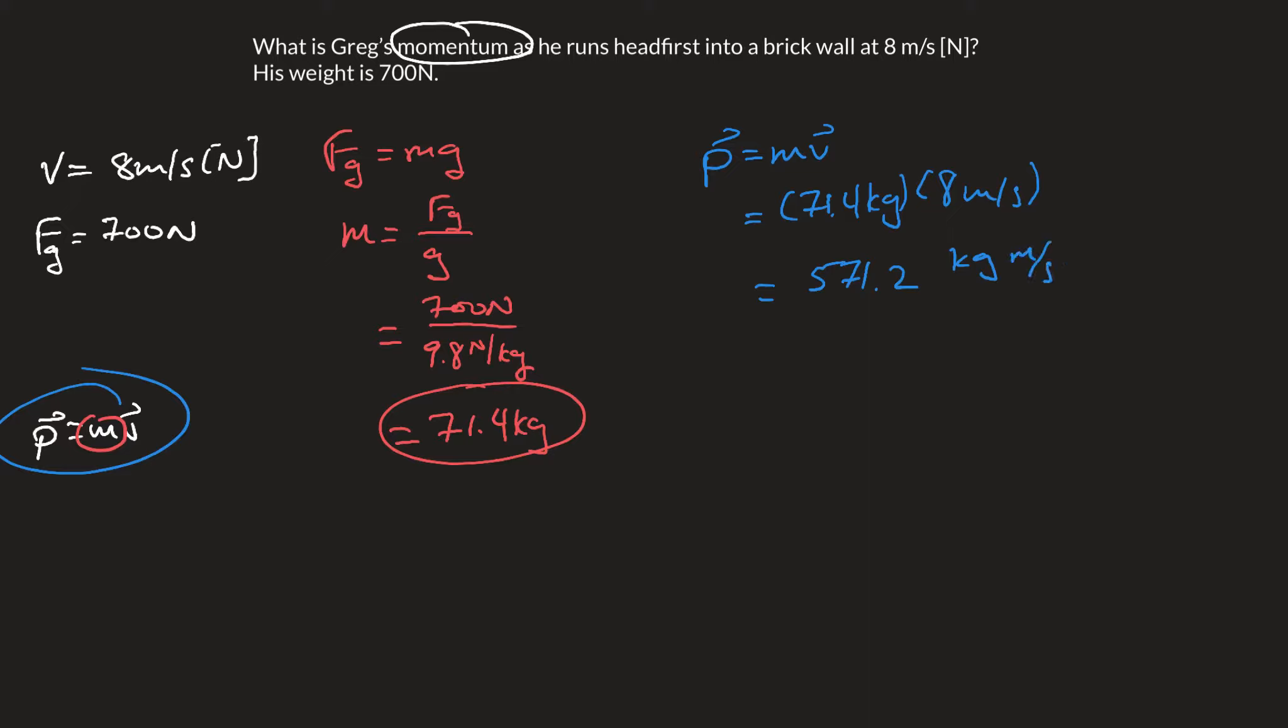And of course, it's a vector. So whatever the direction was on our velocity, since this is all positive, can be the same on momentum. So that's north. We might want to simplify this to some significant figures, 5.7 times 10 to the 2 kilograms meters per second north.